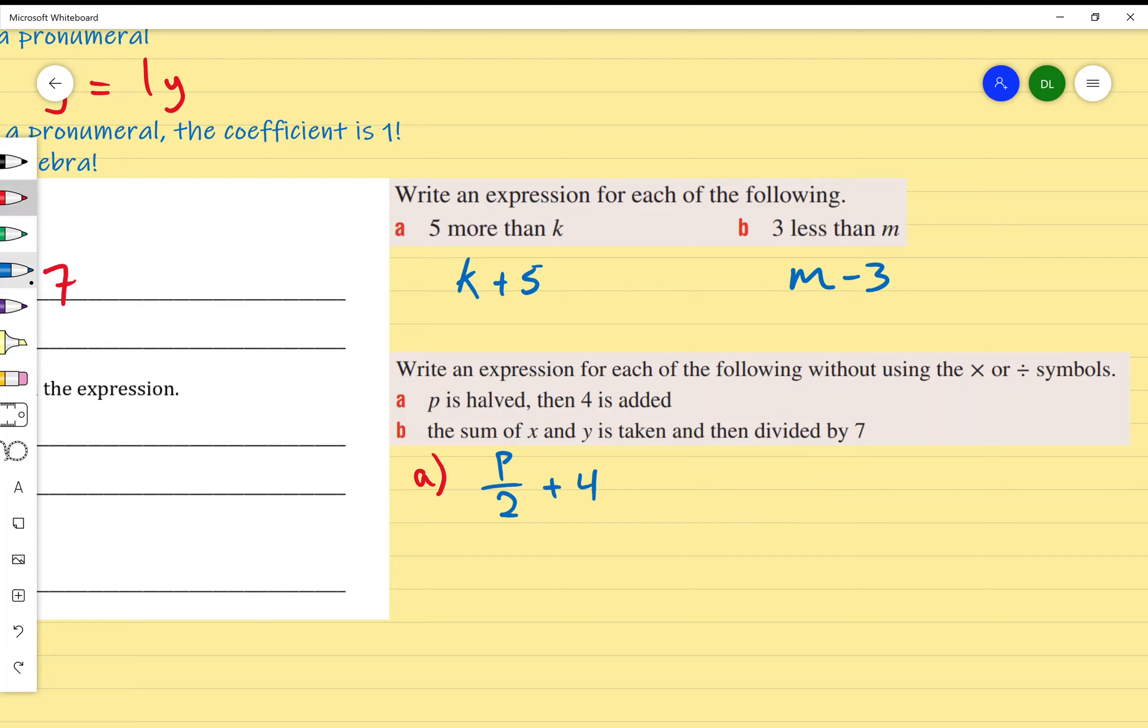Finally, for part b, the sum of x and y is taken and then divided by 7. The sum of x and y, remembering that sum means adding, is x plus y. And then it says divided by 7, so I get all of that and divide it by 7.